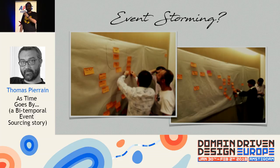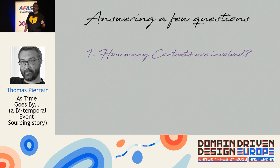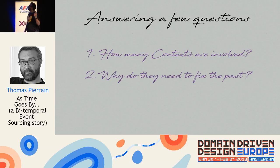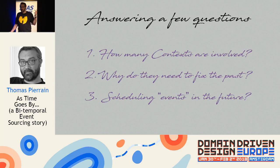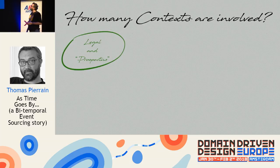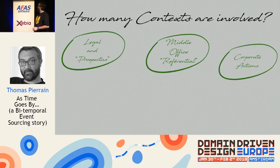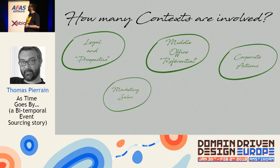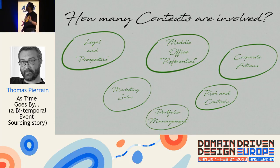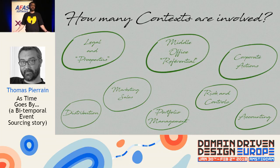I had three questions in mind. First: how many contexts are involved? They said this system should connect with the entire company. The contexts included legal and prospectus, middle office referentials, corporate action, marketing, sales, risk and controls, portfolio management, distribution, and accounting. Basically the entire company — all the contexts you can imagine about that kind of company.